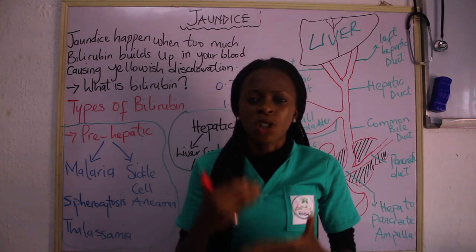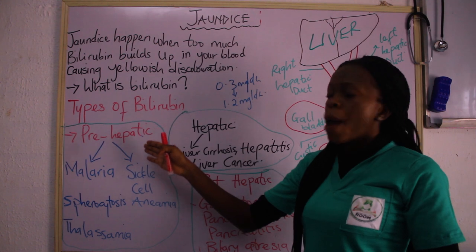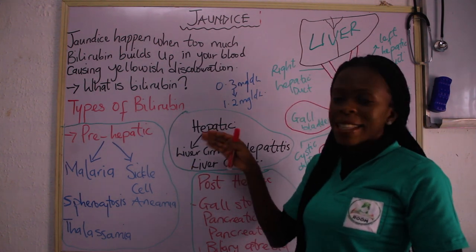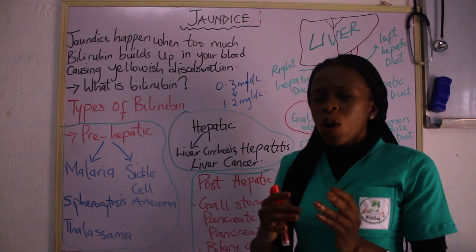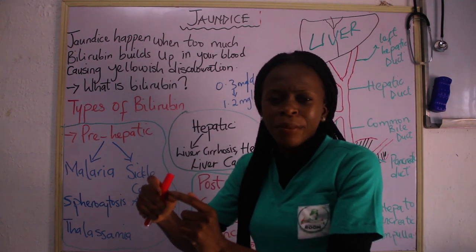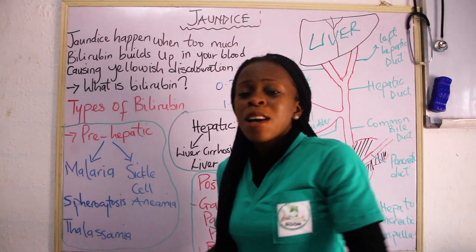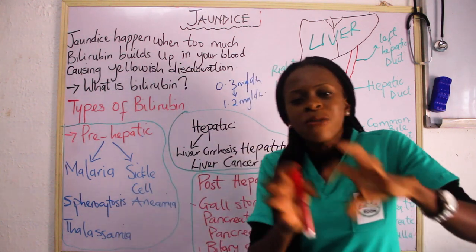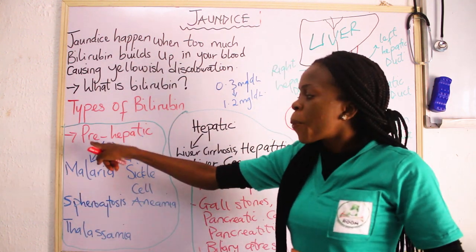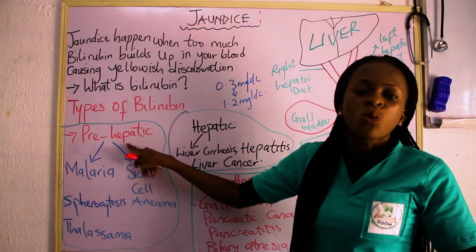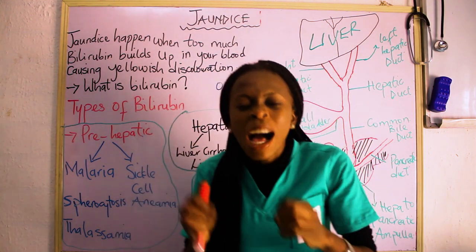Now that takes us to the various types of jaundice. We have three types based on what is happening. The first is pre-hepatic jaundice, the second is hepatic jaundice, and the third is post-hepatic jaundice. When you hear 'hepatic,' what comes to mind should be the liver. Pre-hepatic means before the bilirubin gets to the liver. Hepatic jaundice means the problem is inside the liver. Post-hepatic jaundice means the problem is outside the liver.